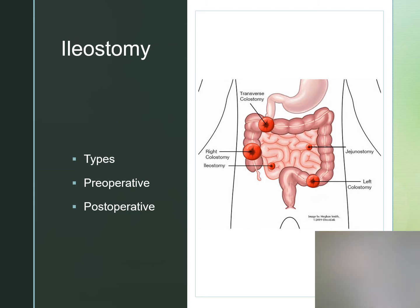It may be a continent or abdominal pouch, involving the creation of an internal reservoir that is emptied periodically. The stool contents are removed periodically with a catheter. Or there may be an ileoanal reservoir, which helps maintain bowel continence.